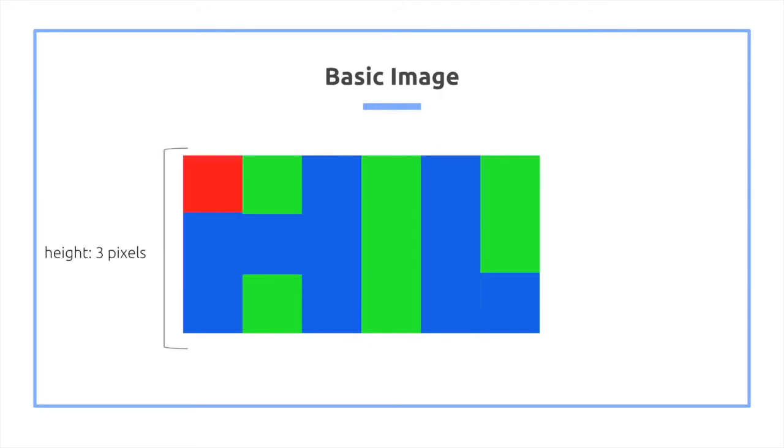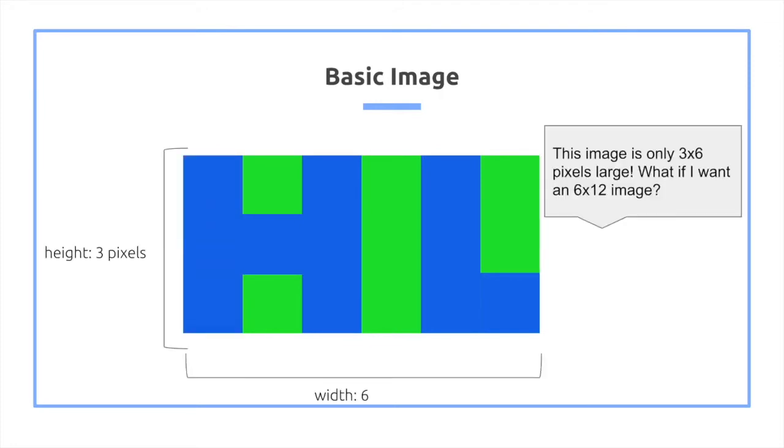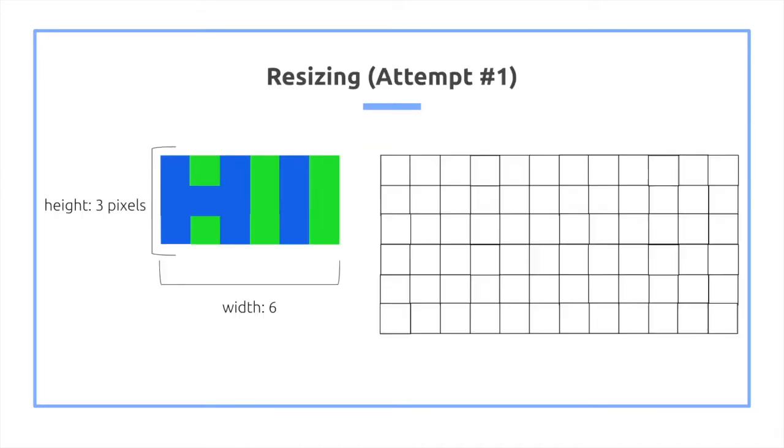Here's our basic image. We have a height of three pixels, then we have a width of six pixels, and it's a three by six image, but let's say we want to make a six by twelve. How do we accomplish this? So if I go through, I'm going to have to guess what type of color pixel goes there, and also what type of color pixel goes there.